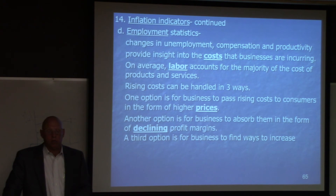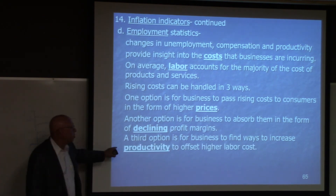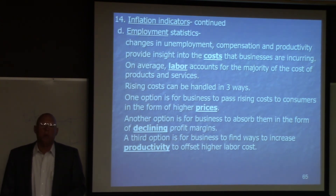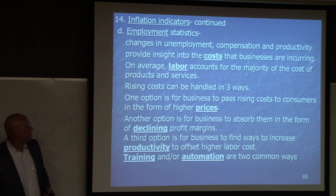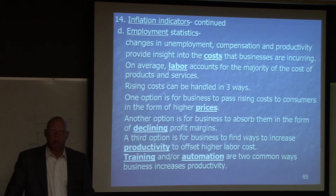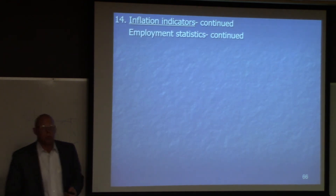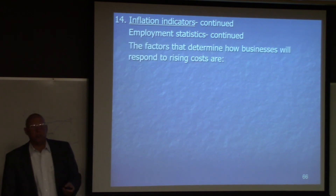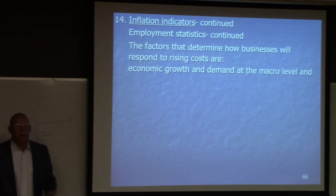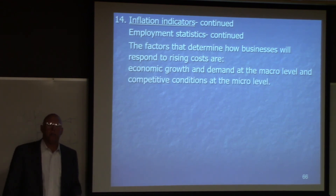A third option is for businesses to find ways to increase productivity to offset higher labor costs — that means higher training, more automation, and layoffs. Training and automation are two ways businesses increase productivity, and a third way is layoffs. But you have to have increased productivity in order to lay people off. Factors that determine how businesses respond to rising costs are economic growth and demand, and competitive conditions.